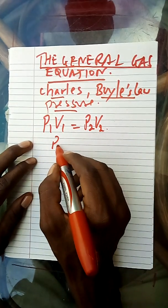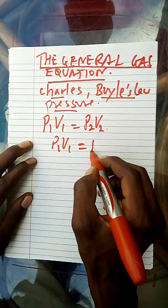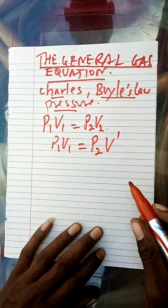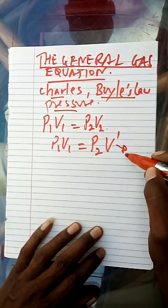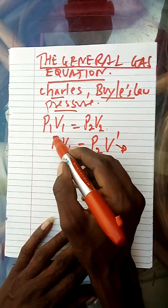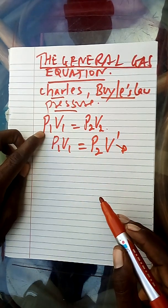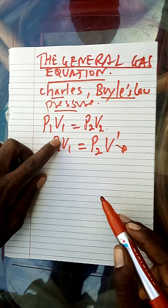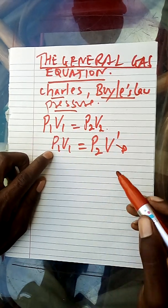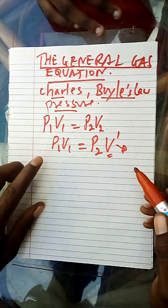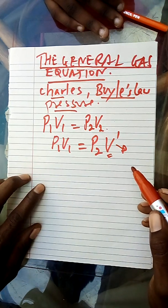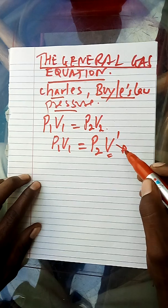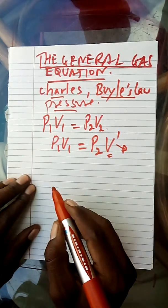Consider this is a special volume that was obtained after you have changed the pressure, because now it is P1 V1 is equal to P2 and this special volume. This is the volume that was obtained after you changed the pressure. The pressure before was P1, and once you change the pressure, according to Boyle's law, the volume also changes. This is the new volume.